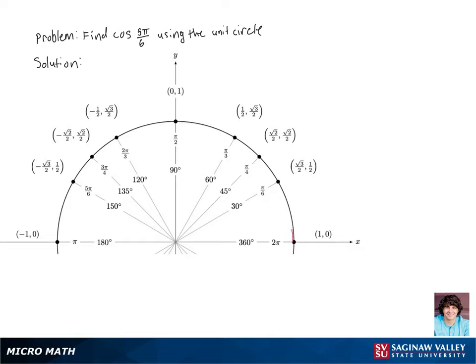Let's find cosine of 5 pi over 6 using the unit circle. We're going to start at the point (1, 0) on our unit circle and travel a distance counterclockwise of 5 pi over 6. Then we look at the point we end up on the unit circle, and cosine of 5 pi over 6 is just the x-coordinate of the point we arrive at after traveling that distance counterclockwise.